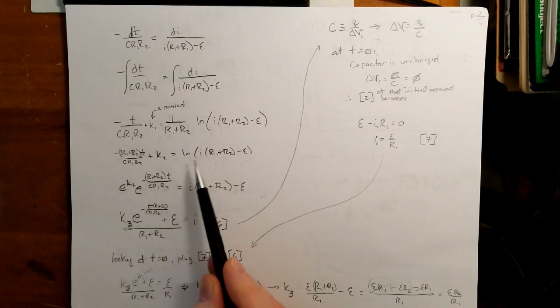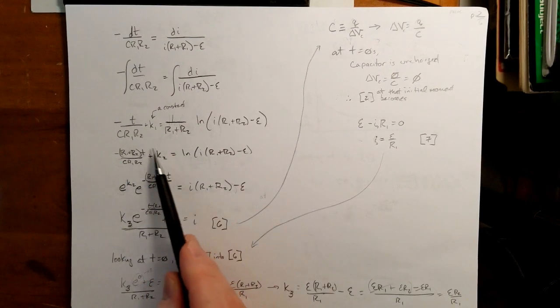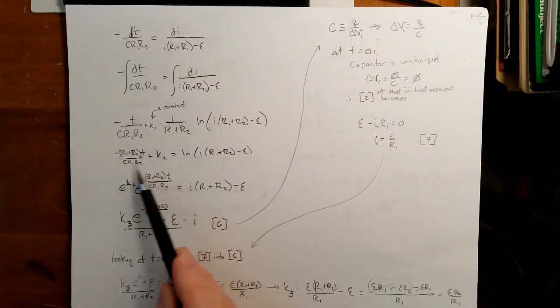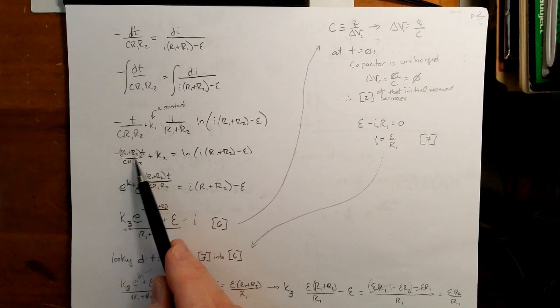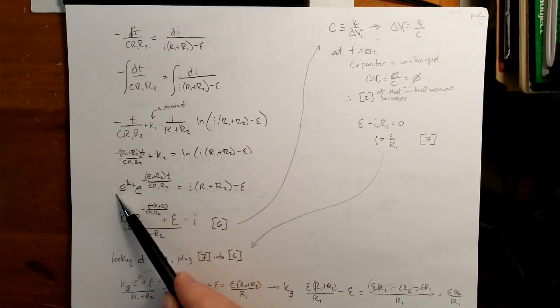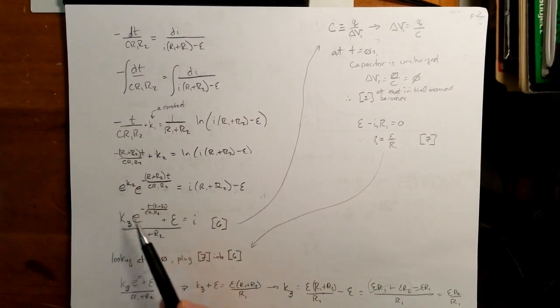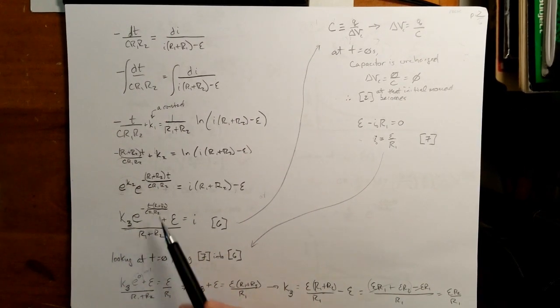And then I use properties of logarithms, and so I now have E to this term right here, and that can be broken up into E raised to this fraction here times E raised to K2. And I end up with this. This is just some other constant. E to a constant is a constant, so I'm just going to call that K3.